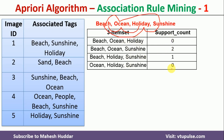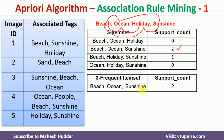Now I count the support for each 3-itemset. Beach-ocean-holiday does not appear anywhere, so it is zero. Beach-ocean-sunshine appears two times. Beach-holiday-sunshine appears one time. Ocean-holiday-sunshine appears zero times. Out of these four possibilities, only beach-ocean-sunshine is the qualified 3-frequent itemset because it has a minimum support count of 2. It is not possible to generate 4-itemsets, so we stop here.